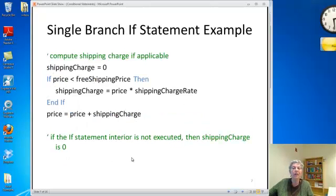Here's an example of a single branch if. I'm giving you free shipping if you buy more than a certain amount. I'll set the shipping charge to zero. If the price is less than the free shipping price, then I'm going to compute a shipping charge by multiplying the price times the shipping charge rate. If the price is big enough, this line does not get done and the shipping charge stays zero. Now there are other ways to structure this. Part of programming is coming up with a nice way of saying whatever it is you want to say.